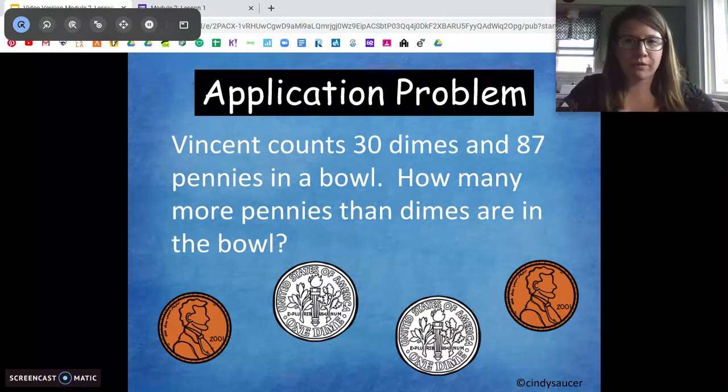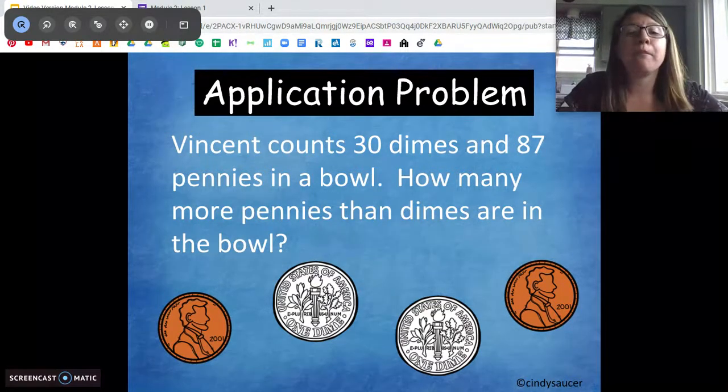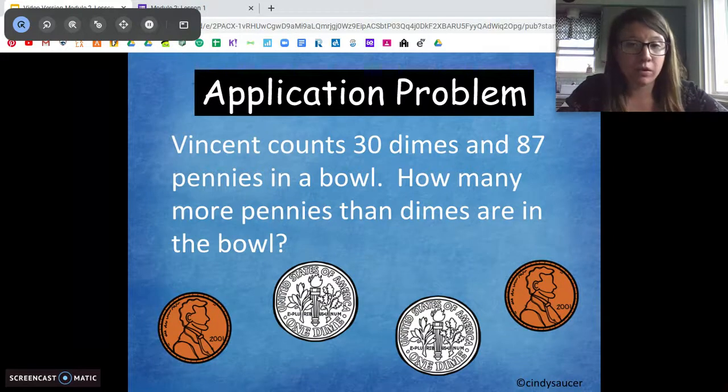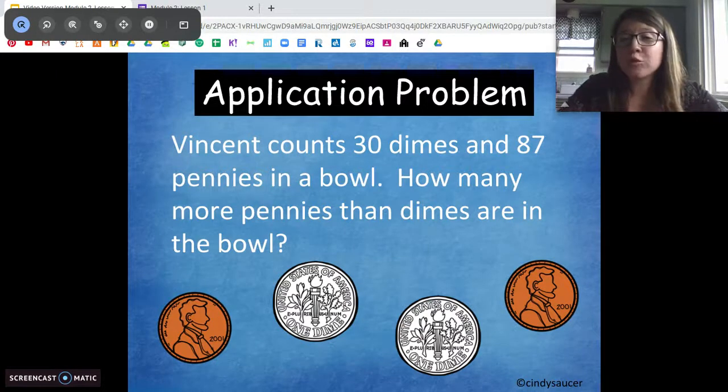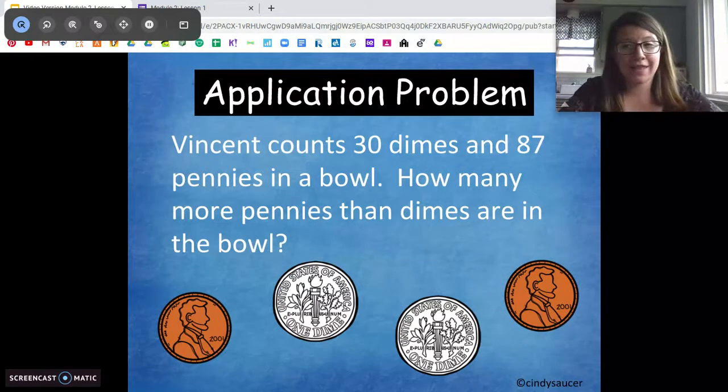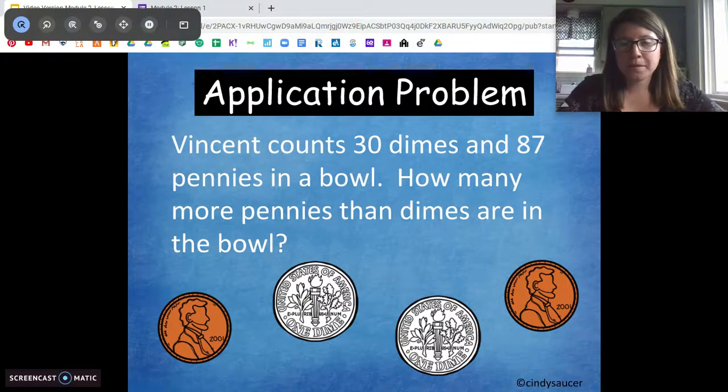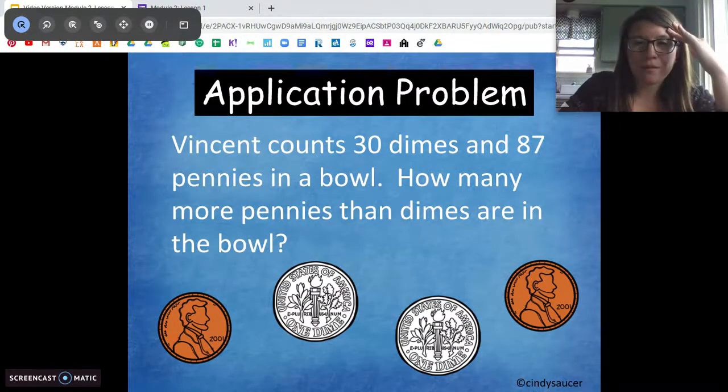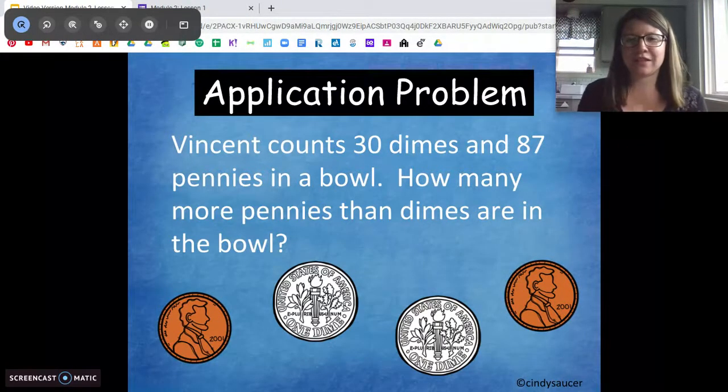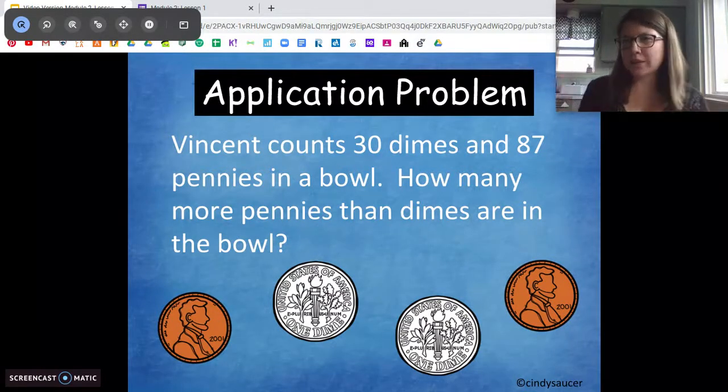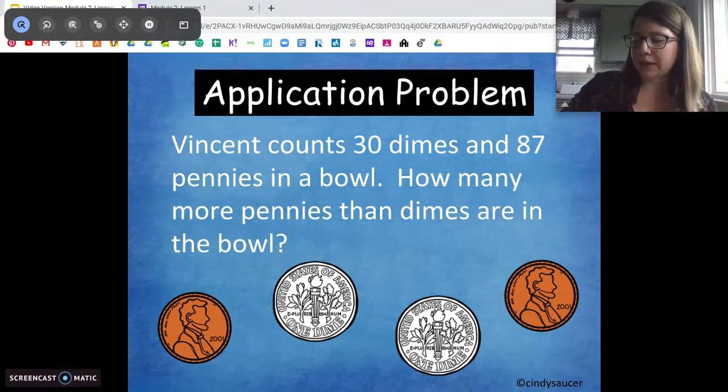So here's our problem for today. Vincent counts thirty dimes and eighty-seven pennies in a bowl. How many more pennies than dimes are in the bowl? So pause there. How do you think we're going to add or subtract these numbers? We want to know how many more pennies than dimes. What do you think? So in my brain, I'm going, if I add those, it's going to tell me how many there are all together. And that's not what the question is asking. They want to know how many more pennies there are. So I think I'm going to have to subtract them.